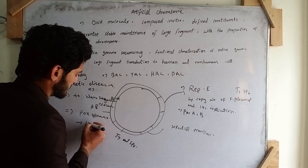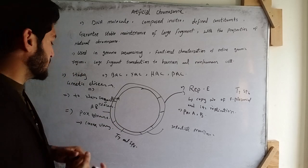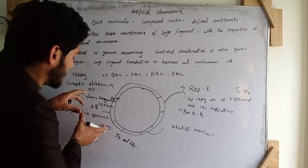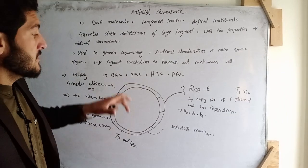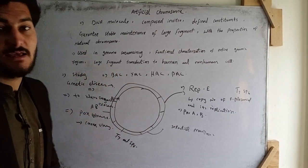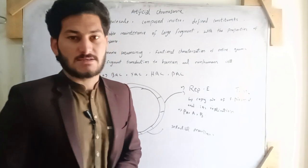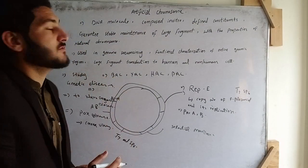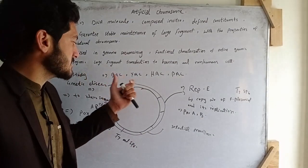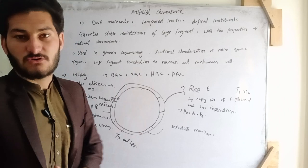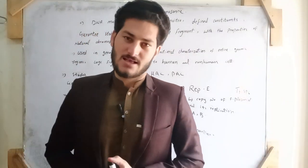We can also study the genome of infectious viruses like poxviruses and coronavirus using Bacterial Artificial Chromosomes. We put the genome of these viruses into the BAC and study the toxic and infectious effects. In the next video, we will discuss the Yeast Artificial Chromosome. Thank you for watching.